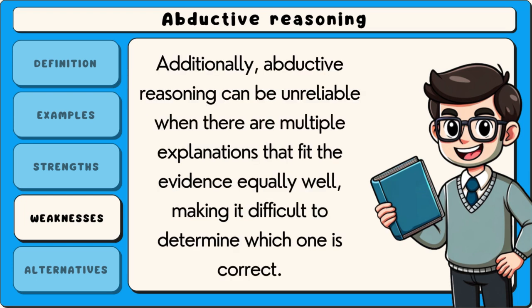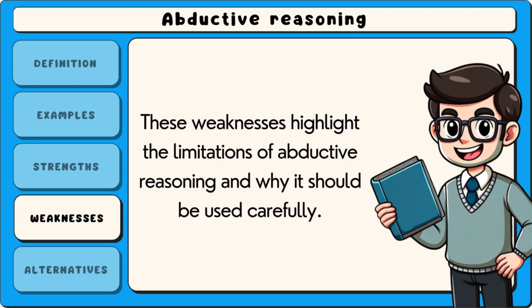Additionally, abductive reasoning can be unreliable when there are multiple explanations that fit the evidence equally well, making it difficult to determine which one is correct. These weaknesses highlight the limitations of abductive reasoning and why it should be used carefully.